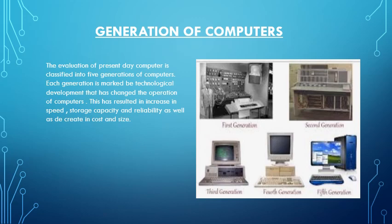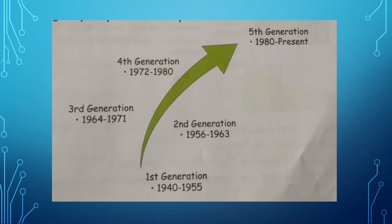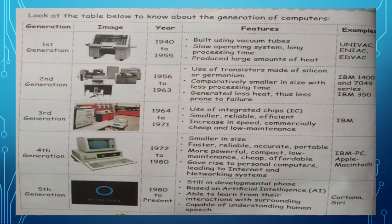Generation of Computers: The evolution of the present-day computer is classified into five generations. Each generation is marked by a major technological development that changed the operation of computers, resulting in increased speed, storage capacity, and reliability, as well as a decrease in cost and size. The 1st generation: 1940–1955. 2nd generation: 1956–1963. 3rd generation: 1964–1971. 4th generation: 1972–1980. 5th generation: 1980 to present.